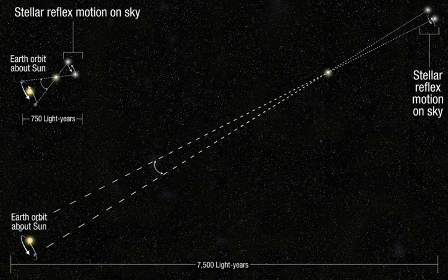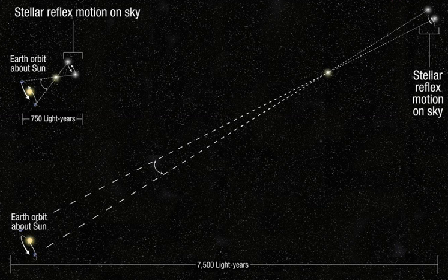In computer vision the effect is used for computer stereo vision, and there is a device called a parallax rangefinder that uses it to find range, and in some variations also altitude to a target. A simple everyday example of parallax can be seen in the dashboard of motor vehicles that use a needle-style speedometer gauge. When viewed from directly in front, the speed may show exactly 60, but when viewed from the passenger seat the needle may appear to show a slightly different speed, due to the angle of viewing.